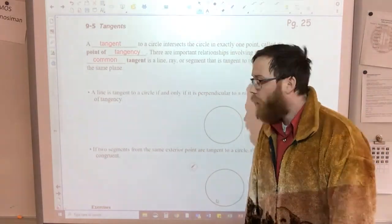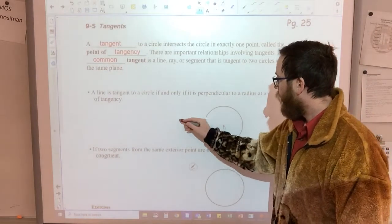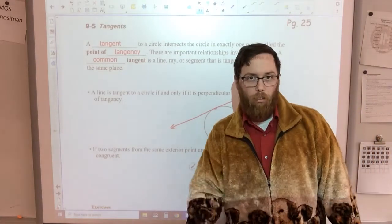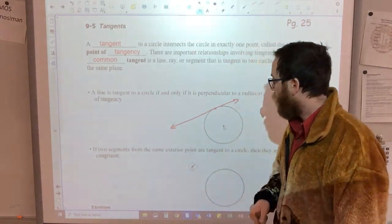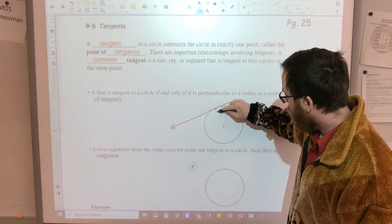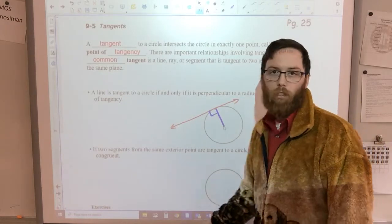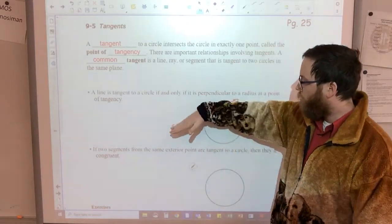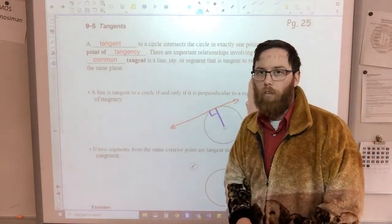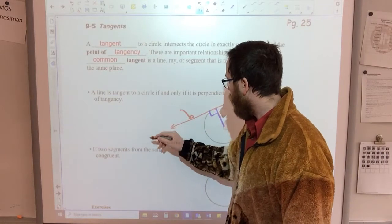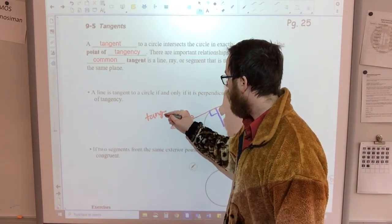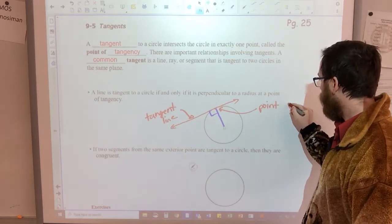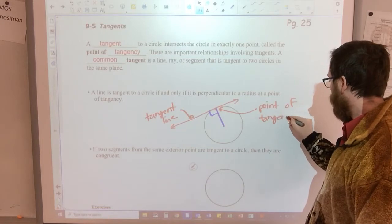If I was gonna draw a tangent line, this would be my circle. The tangent line would look something like that. So this would be the line, that point that it touches the circle, which is only one point, is called the point of tangency. The radius of this circle would be perpendicular to that tangent line. That's what makes a tangent line.